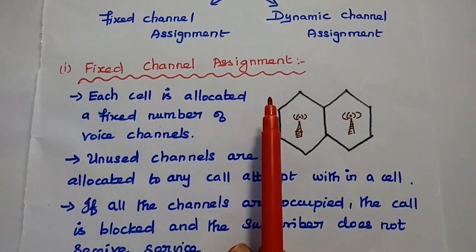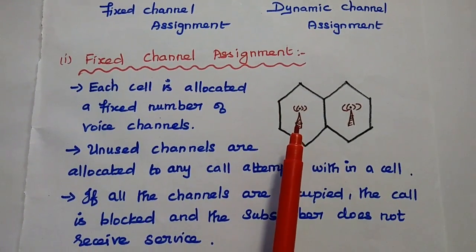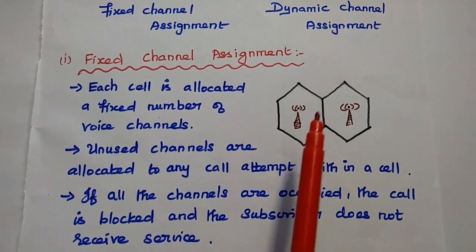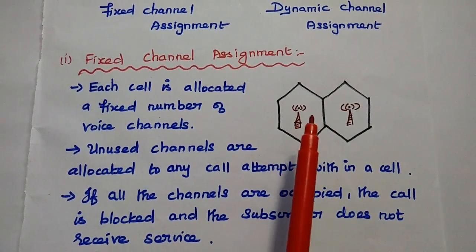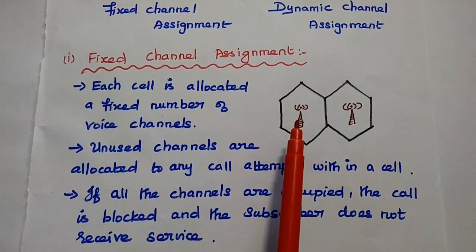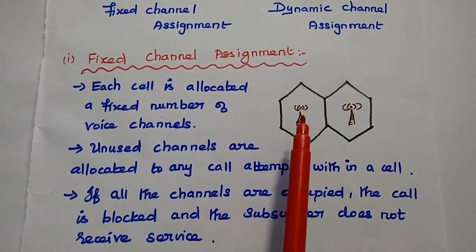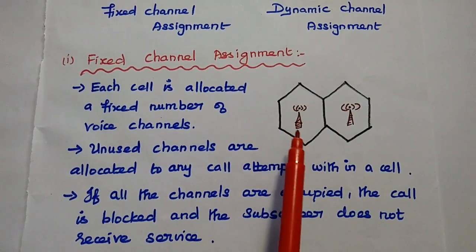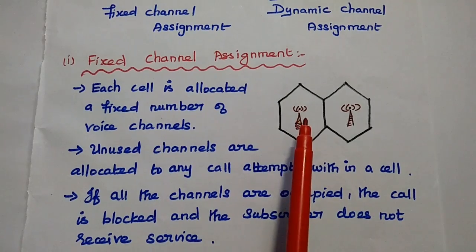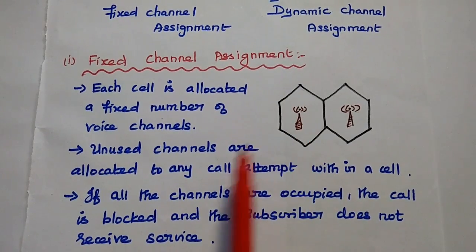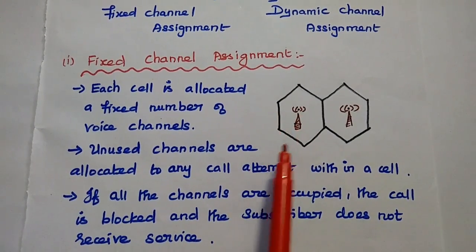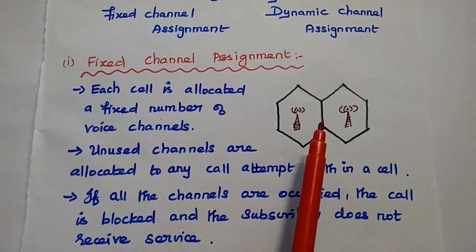In fixed channel assignment, each cell is allocated with a fixed number of voice channels. Whenever there is a call request, the unused channel within this limit is allocated to that particular call. So unused channels are allocated to any call attempt within this cell coverage area.